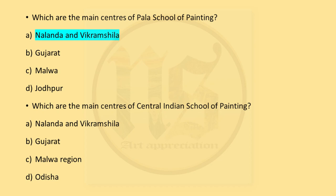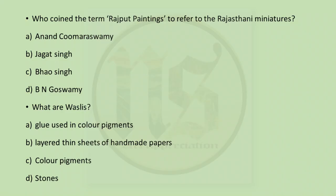Which are the main centers of Central Indian School of Painting? We discussed this — Malwa region was the main center. Who coined the term 'Rajput paintings' to refer to the Rajasthani miniatures? Jagat Singh and Bhau Singh were rulers for Rajasthani sub-schools and did not write on art history. B.N. Goswami is professor emeritus of Punjab University Chandigarh, popular for his research on Pahadi miniatures. A — Anand Kumar Swami is the correct answer. He was a Ceylonese art historian; Ceylon is the earlier name for Sri Lanka. He did a lot of research on Indian art and coined the term 'Rajput paintings'. What are Vasleys? Vasleys are layered thin sheets of handmade paper. A, C and D are wrong; our correct answer is B.